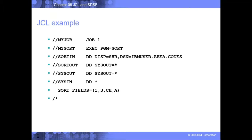This is how an actual JCL will look like. You use double slash for each of the statements. When you're trying to pass some data or have some in-stream data, you use double slash. And then comes your DCL closure of your in-stream.